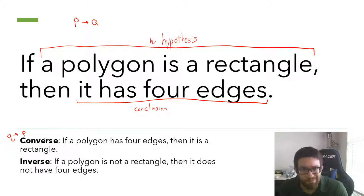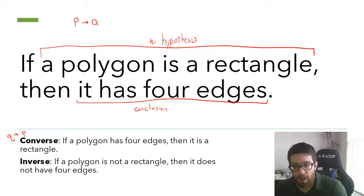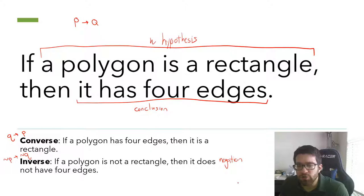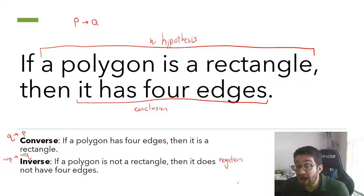If P implies Q is the original statement, the converse is Q implies P — we swap the order of the hypothesis with the conclusion. That forms the converse: if a polygon has four edges, then it's a rectangle. The inverse doesn't change the order but changes both P and Q to their opposites — what we call negations. In logic it's called a negation. So the negation puts the word 'not' next to something. The inverse is: if a polygon is not a rectangle, then it does not have four edges.